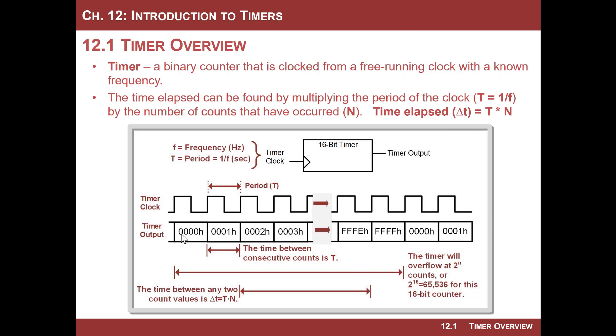Well, every time you take a counter, you clock it with the edge of a clock. That means that every period of the clock, the counter increments. And so you know that every count has a value of, or a time has elapsed in the amount of one period. That's pretty awesome because if you just take the number of counts that have occurred, and you multiply it by the period, you can figure out the total amount of time.